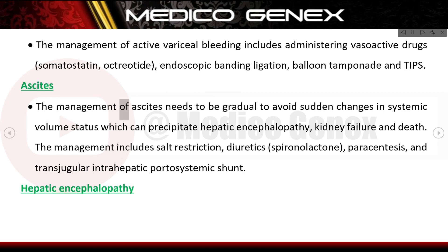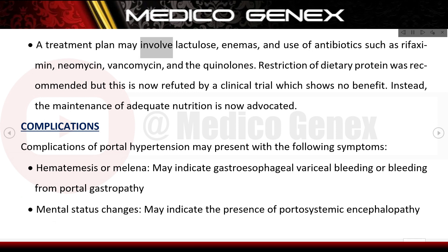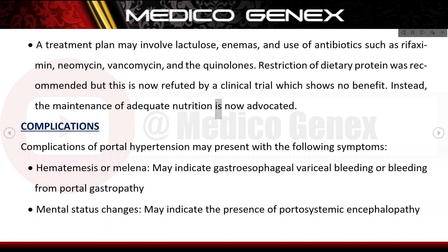Management of ascites must be gradual to avoid sudden changes in systemic volume status, which can precipitate hepatic encephalopathy, kidney failure, and death. It includes salt restriction, diuretics such as spironolactone, paracentesis, and transjugular intrahepatic portosystemic shunt. For hepatic encephalopathy, a treatment plan may involve lactulose, enemas, and antibiotics such as rifaximin, neomycin, vancomycin, and the quinolones. Restriction of dietary protein was previously recommended but is now refuted by clinical trial; maintenance of adequate nutrition is now advocated.